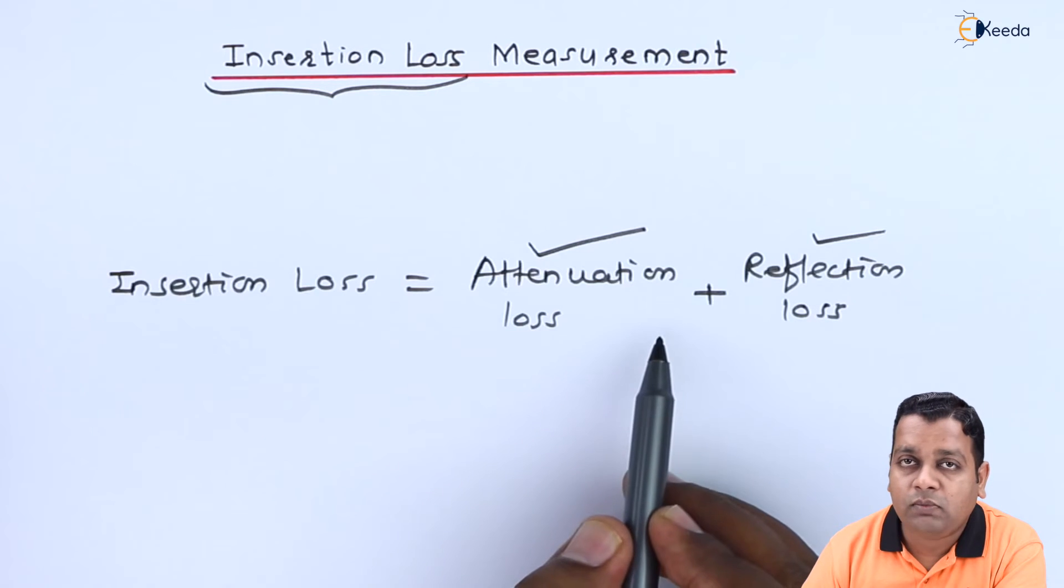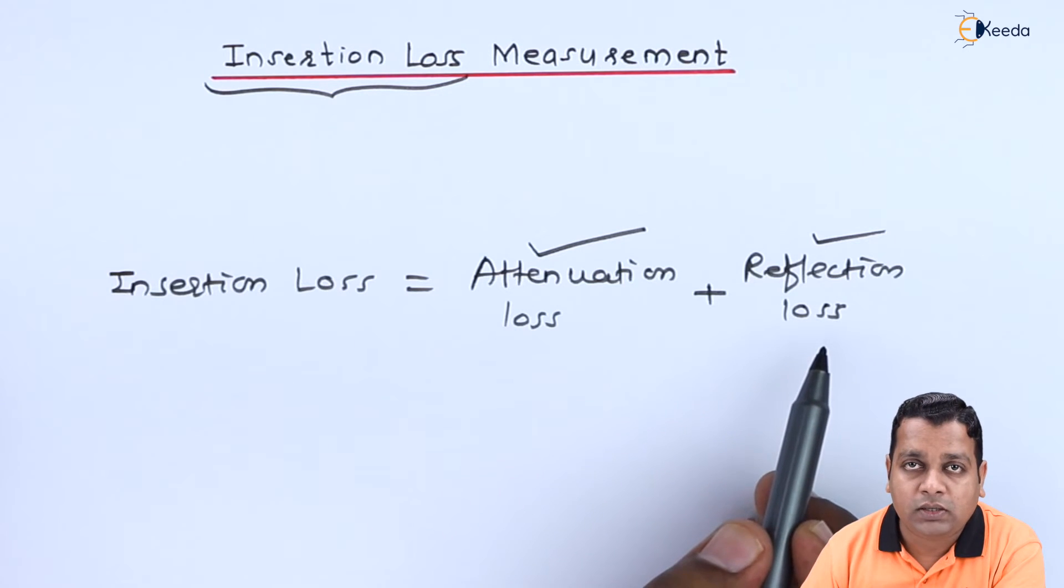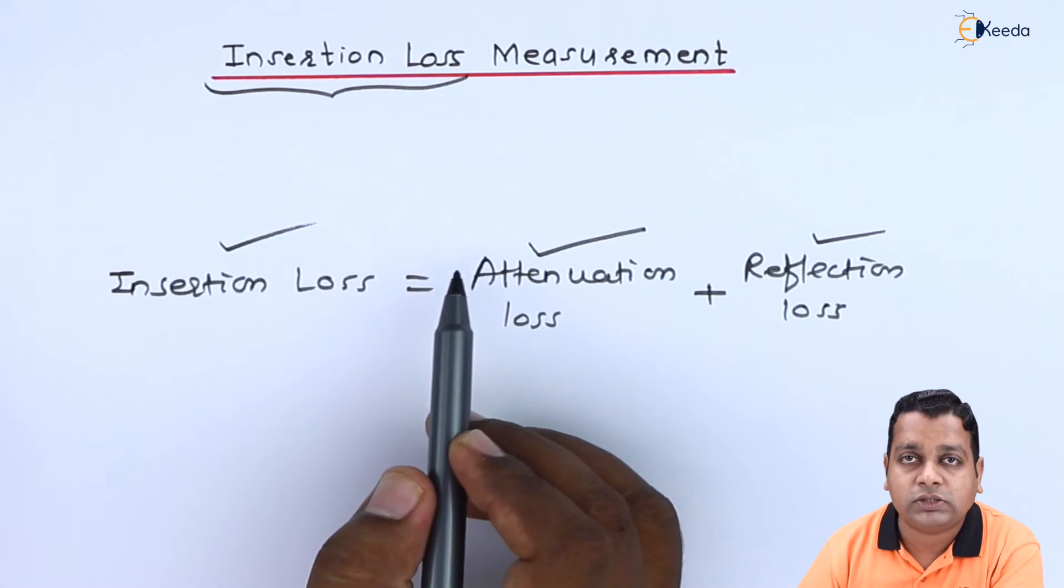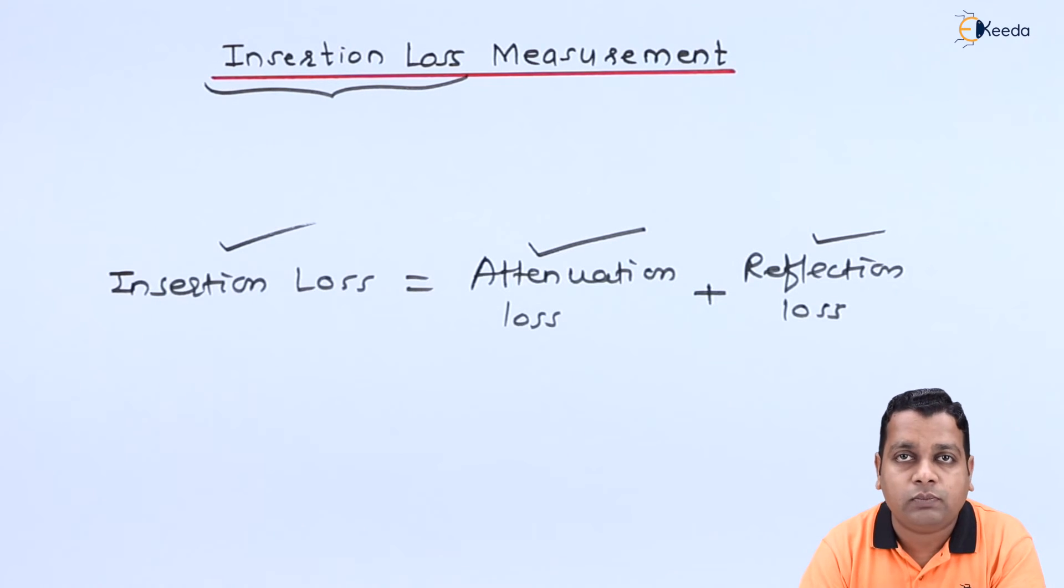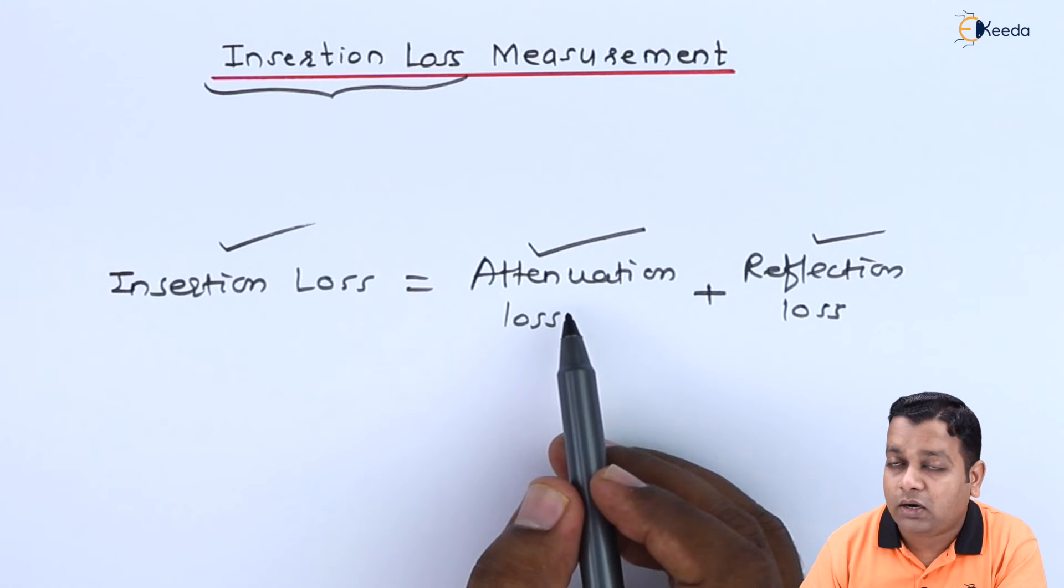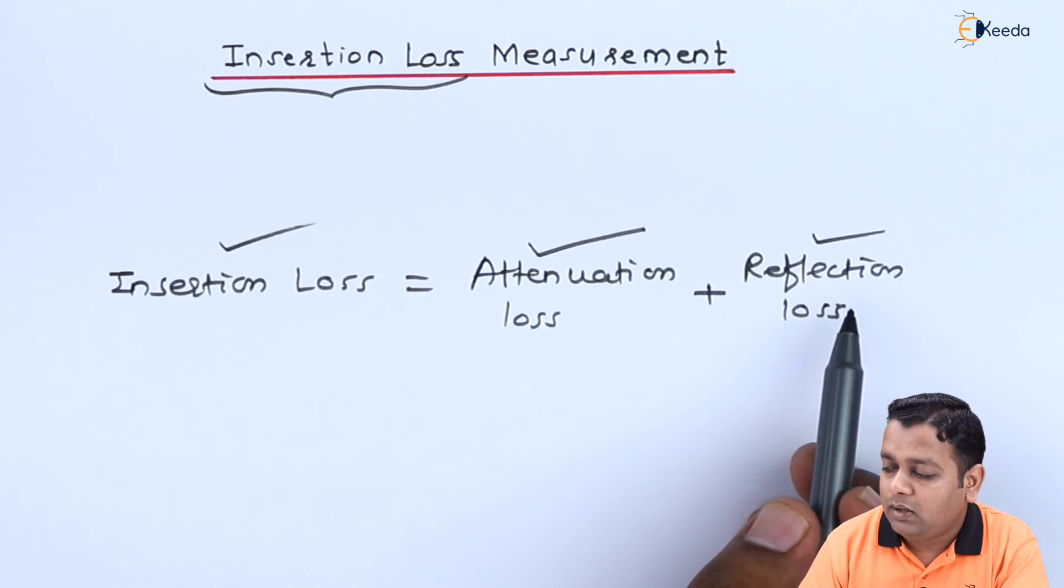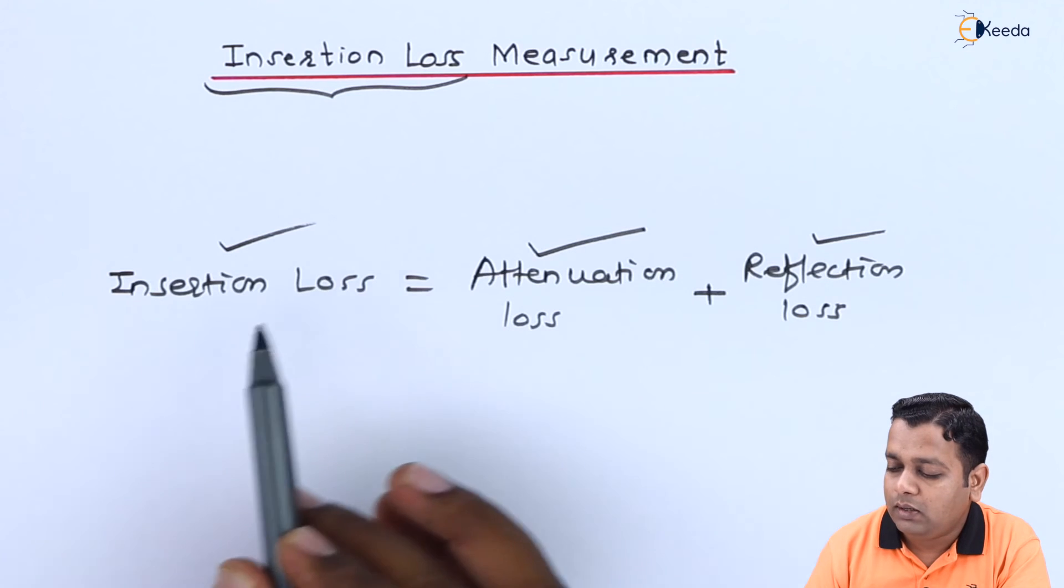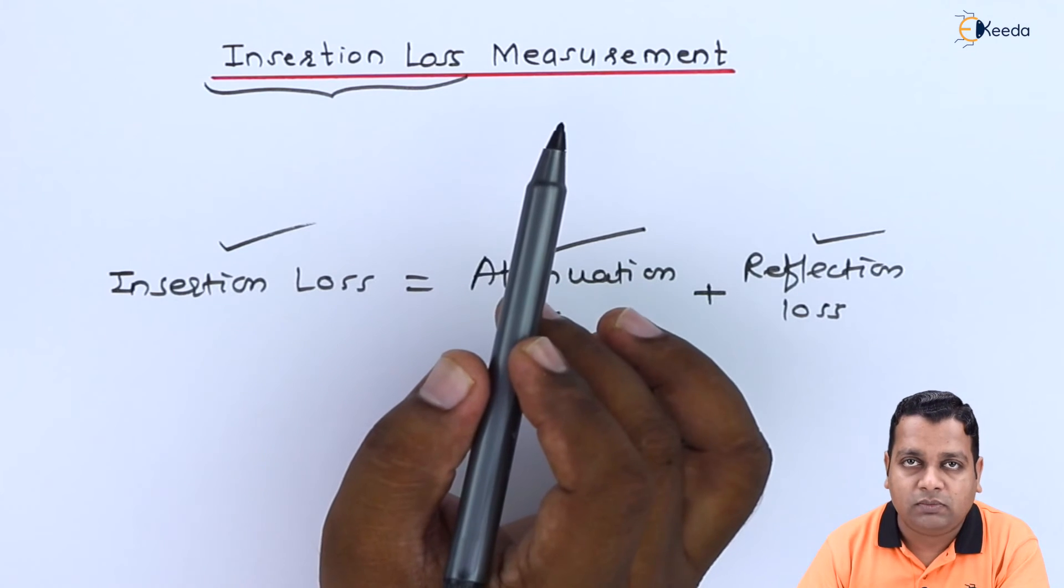RF substitution method plus the reflectometer can give us the overall measurement of insertion loss for the microwave signal propagating in the microwave system. I hope addressing the topics of attenuation measurement and measurement of impedance will complete the insertion loss measurement.